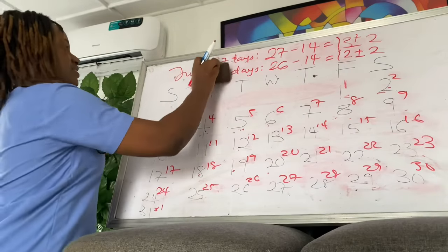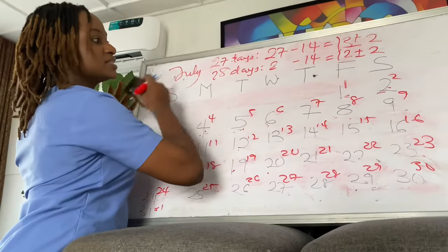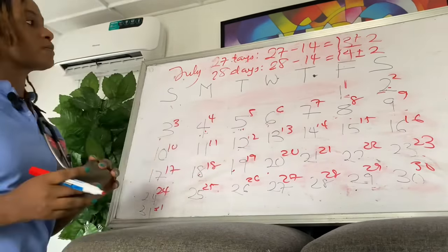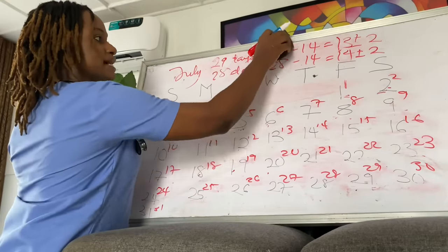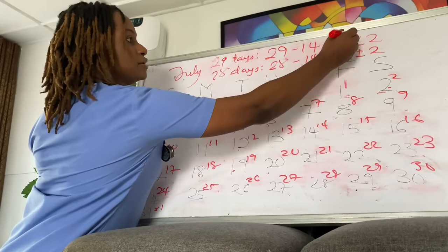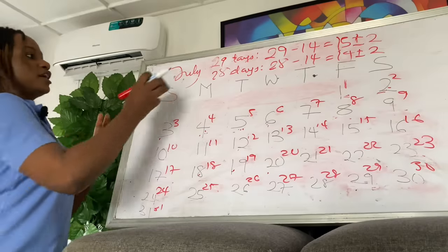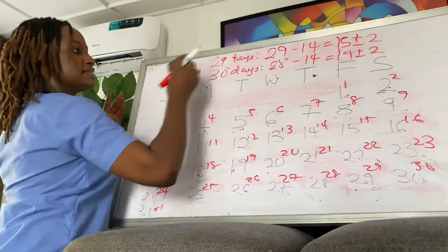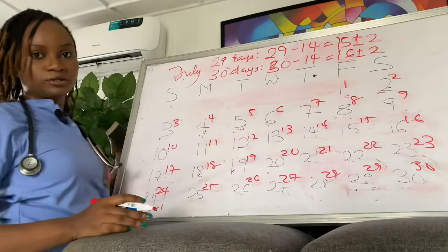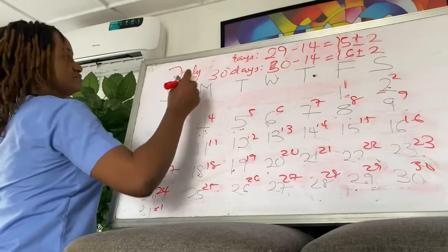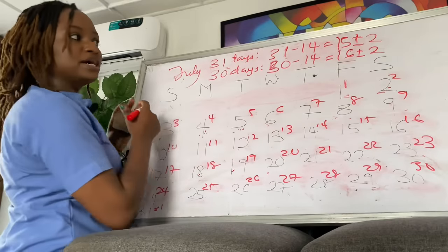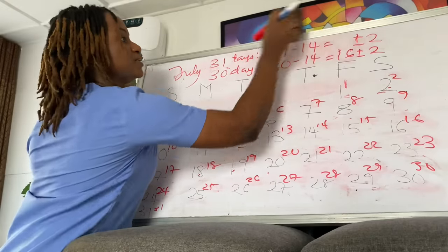For a 29-day cycle: 29 minus 14 equals 15, plus or minus 2. For a 30-day cycle: 30 minus 14 equals 16, plus or minus 2. For a 31-day cycle: 31 minus 14 equals 17, plus or minus 2.